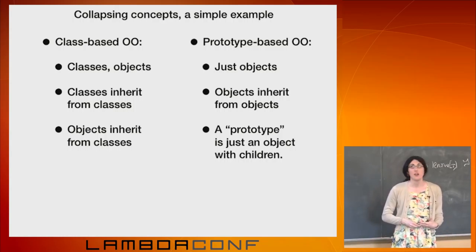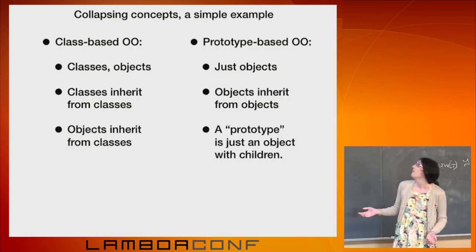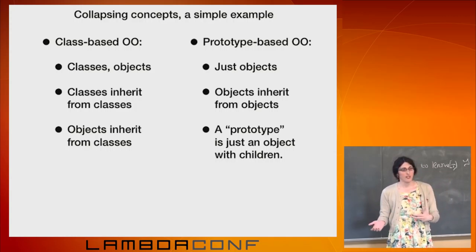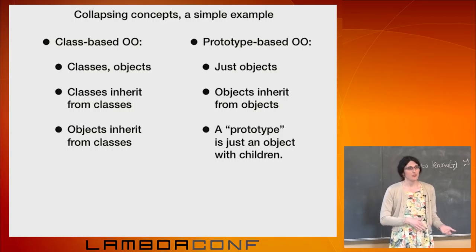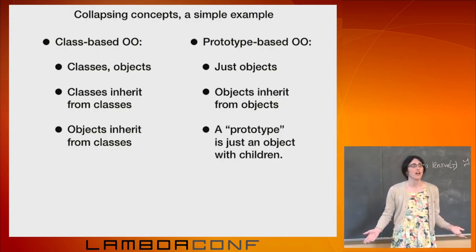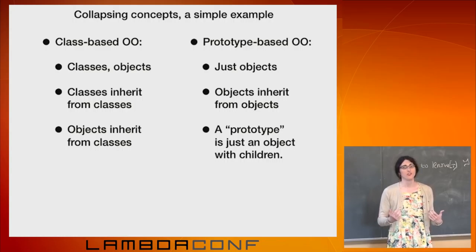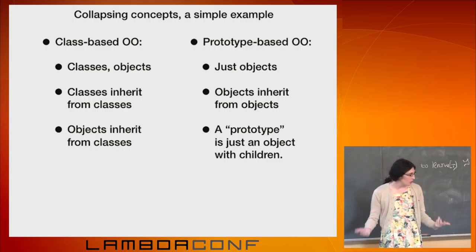So one example of this might be in object-oriented programming. Most languages are what's called class-based, but a couple are called prototype-based. Which means that normally in class-based systems you have classes and objects. Classes inherit from classes. Objects instantiate classes. But you could kind of think of instantiation as just being a funny kind of inheritance. And that means we could say, well, we don't need classes. We could just let objects inherit from other objects. And at that point a class is no longer a thing. A class is just a thing that an object is doing.